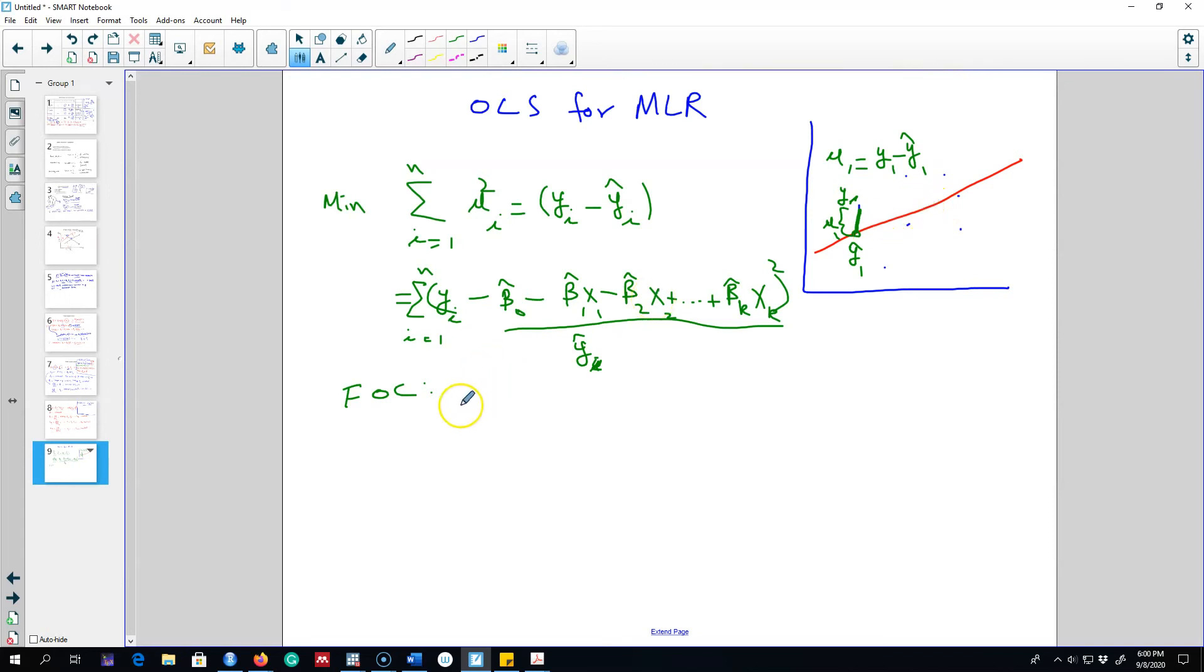So if you are not getting the mathematics behind this, don't worry, you can go back to the simple linear regression modeling case and look at the graph and see what is the logic behind using the method of least squares. And essentially, we are doing the same thing here. We are minimizing the sum of squares residuals.